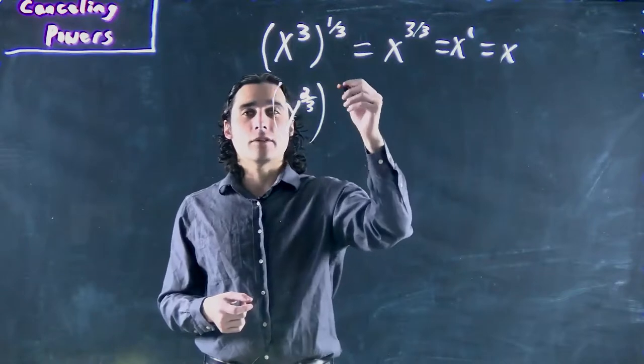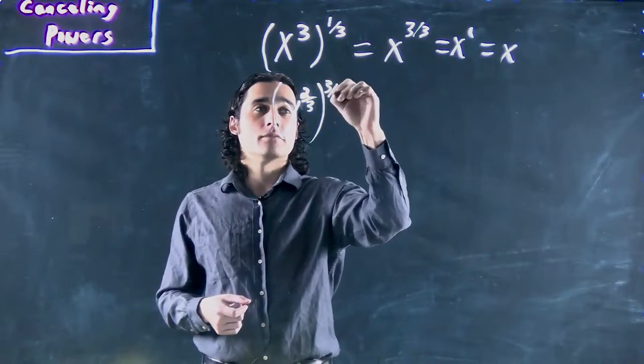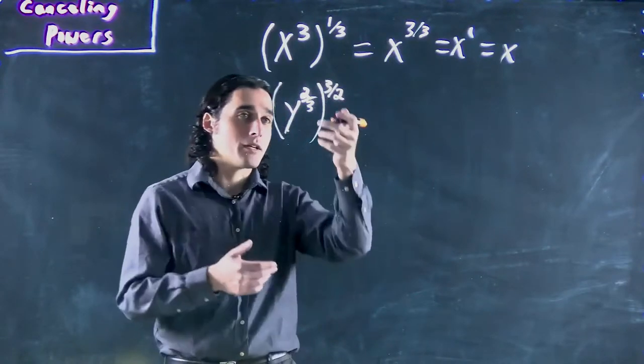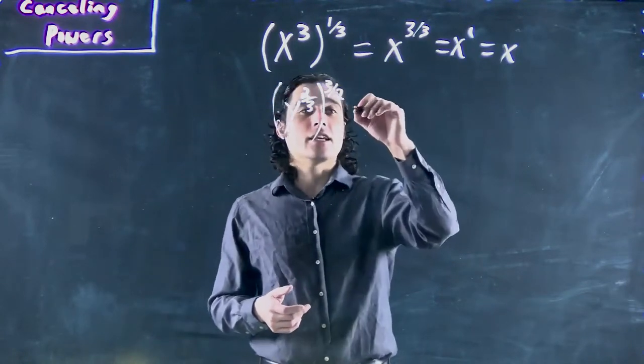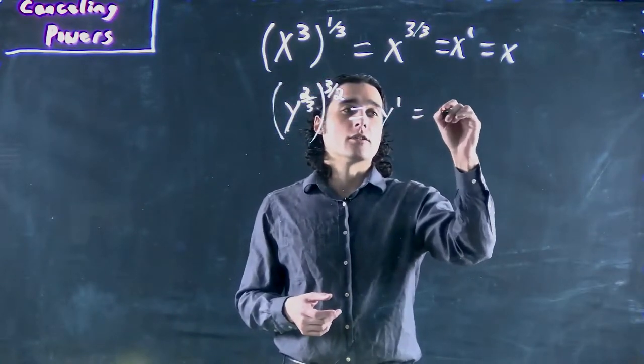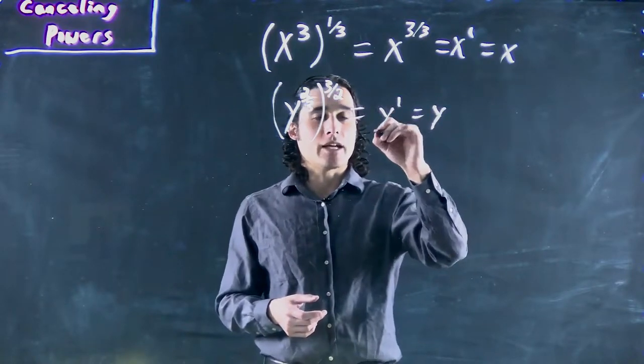Which my squeaky marker is going to help me write. Well, the inverse of 2 over 3 is 3 over 2. I flipped it or put 1 over it and it becomes that. Well, this is the same as saying y to the 1 or y. Again, I've canceled out the power simply by multiplying by the inverse.